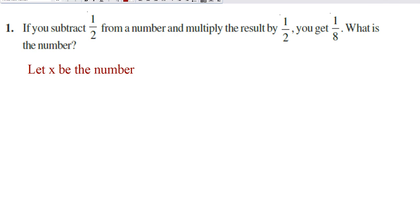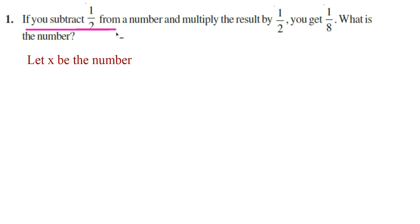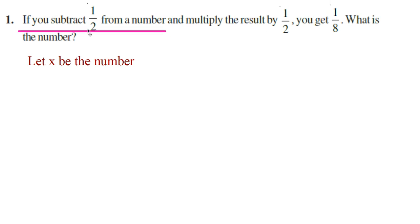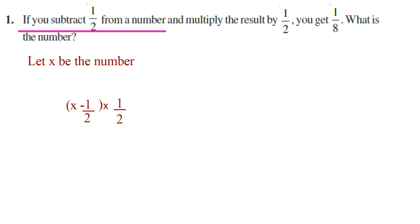Now one condition is given in the question. If you subtract 1/2 from a number — the number we took as x — subtract 1/2 from x, you can write it as x minus 1/2. And multiply the result by 1/2: you have to multiply (x minus 1/2) by 1/2. It is given that you get 1/8, so the answer will be 1/8.